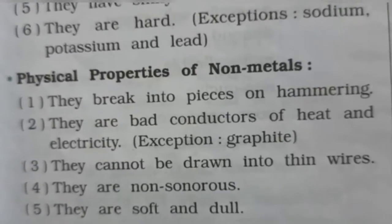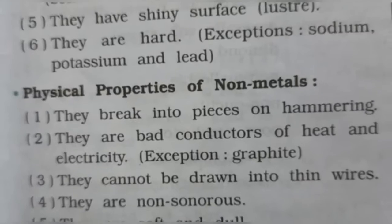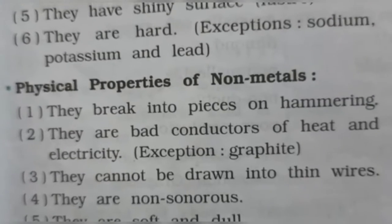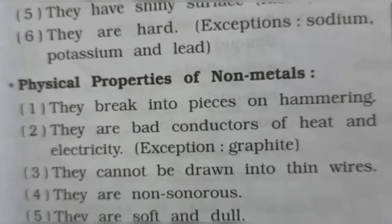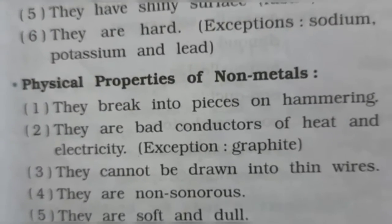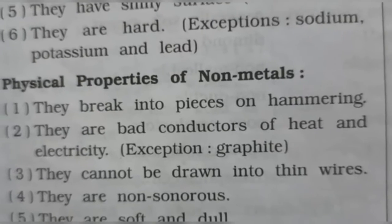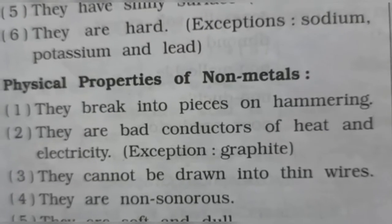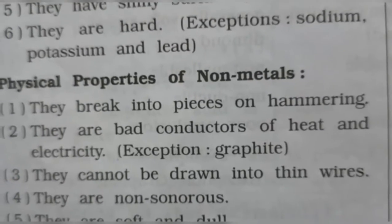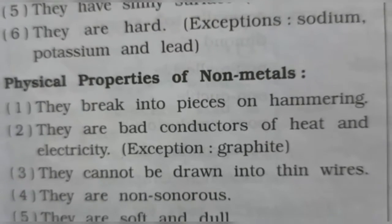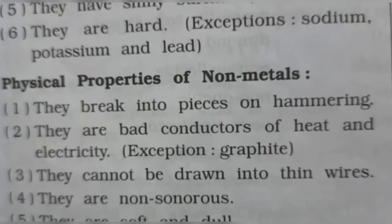The fifth property of non-metals is that they are soft and dull. Non-metals have dullness - not a lustrous surface. They are dull. So these are the physical properties of metals and non-metals. We will read the whole chapter in the textbook.